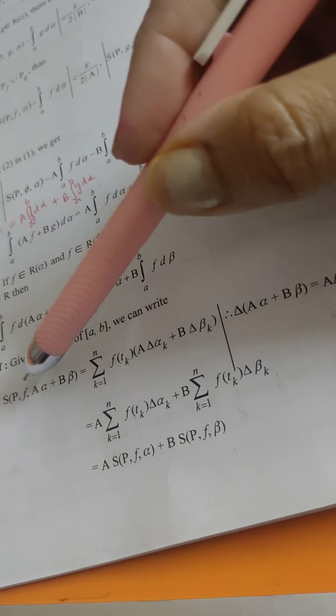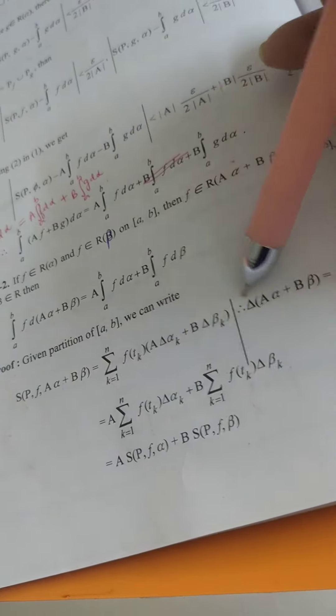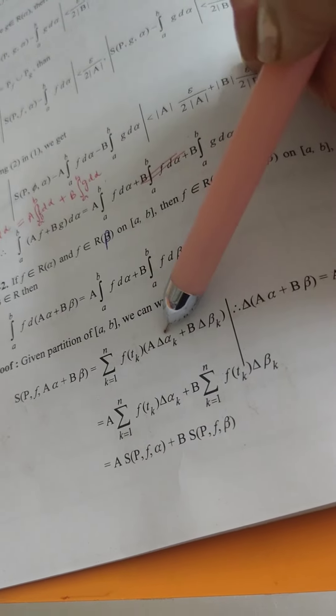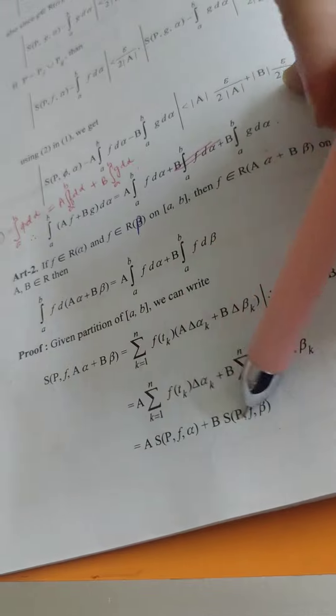So yaha par ab ek alpha toh hai nahi, yaha par combination hai. Toh again combination ka hi change aayega. That is a delta alpha_k plus b delta beta_k - separate kar loge. Toh aapke paas aapka result aa jayega, that this is equals to this.